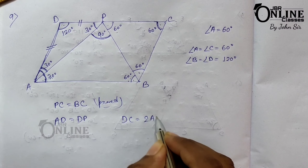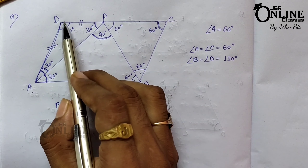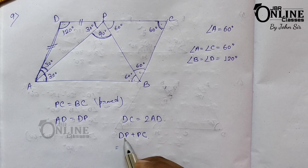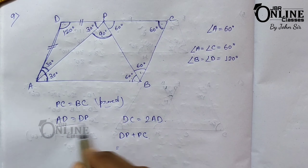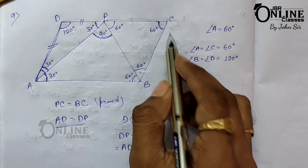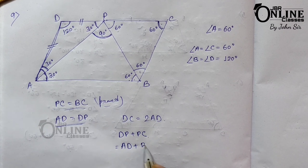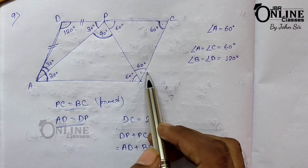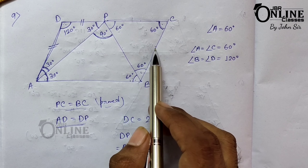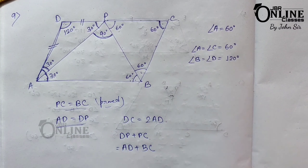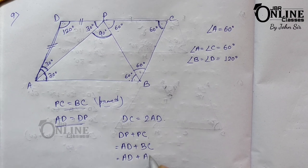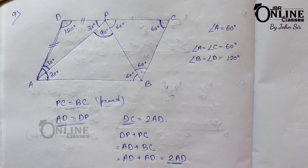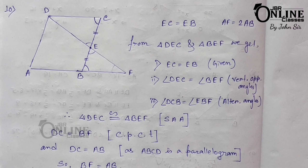To prove DC equals 2AD: DC = DP + PC. Substituting DP = AD and PC = BC, we get DC = AD + BC. Since ABCD is a parallelogram, AD and BC are opposite sides and always equal, so BC = AD. Therefore DC = AD + AD = 2AD — proved.